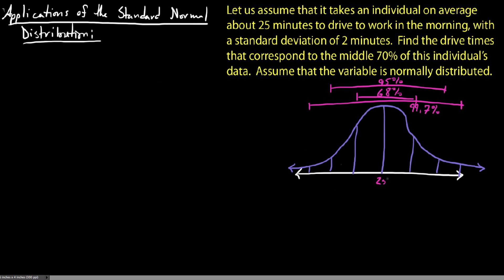We know the average is 25, two minutes is our standard deviation. So 27, 29, 31 going up three standard deviations to the right. And 23, 21, 19 going to the left. But essentially, we already know the area we're concerned with is the middle 70% of our data.